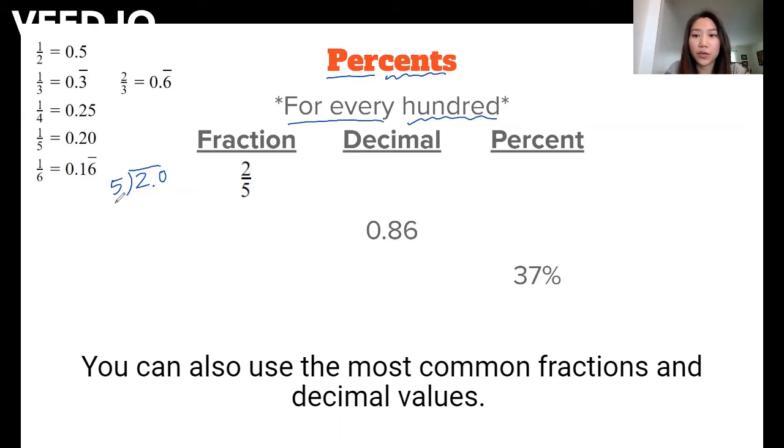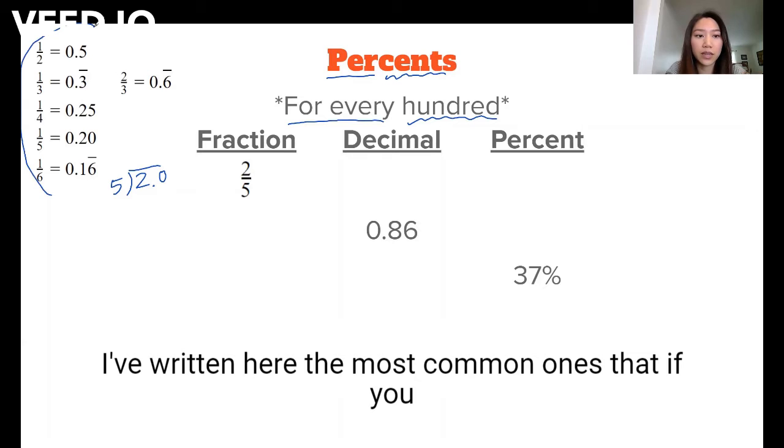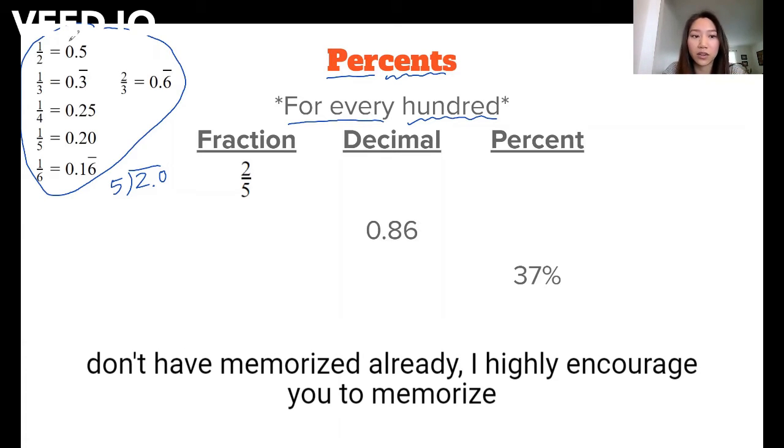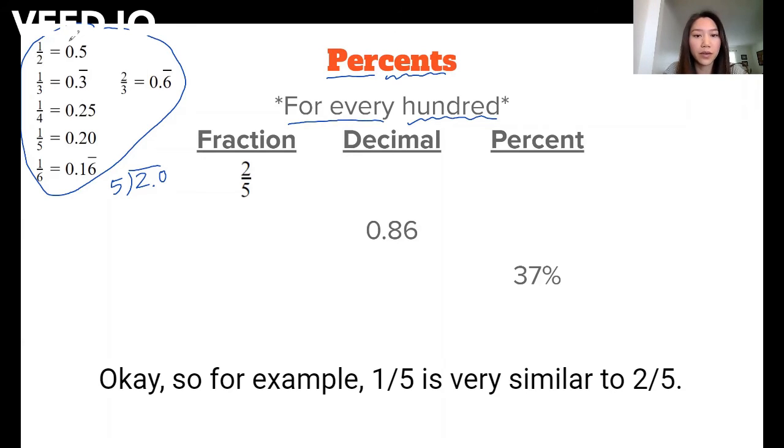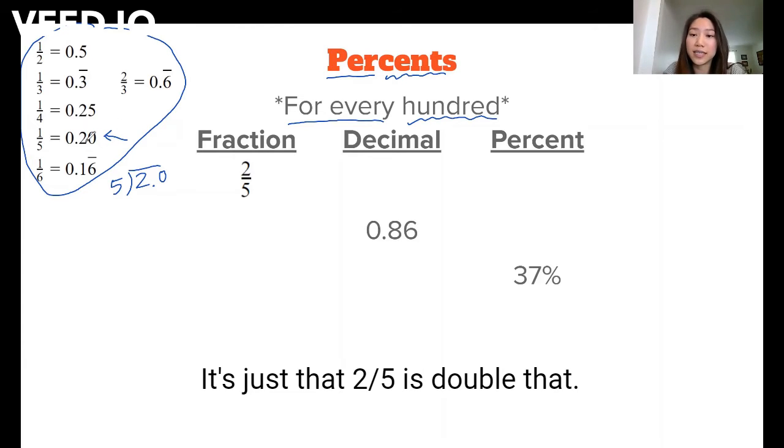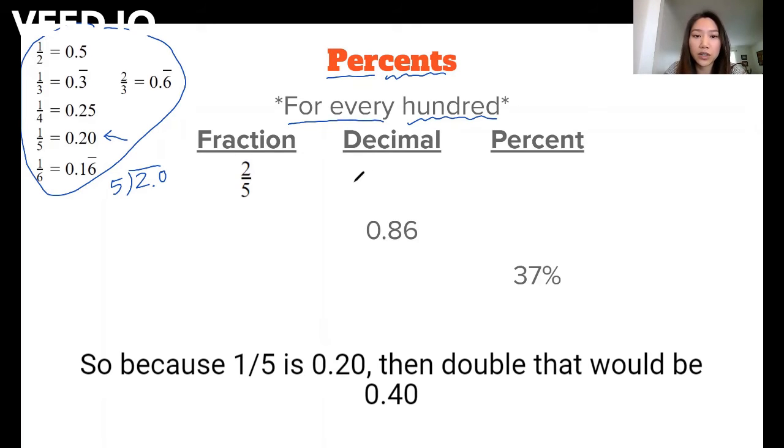You could also use the most common fraction and decimal values. So I've written here the most common ones that if you don't have memorized already, I highly encourage you to memorize them because they do come up so often. For example, one-fifth is very similar to two-fifths. It's just that two-fifths is double that. So because one-fifth is 0.20, then double that would be 0.40.